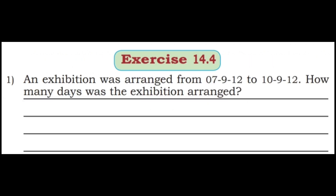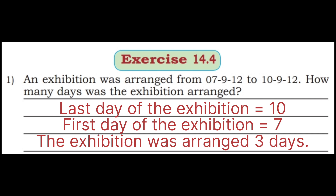Let us see Exercise 14.4. First question: An exhibition was arranged from 7/9/12 to 10/9/12. How many days was the exhibition arranged? The last day of the exhibition is 10, and the first day of the exhibition is 7. The exhibition was arranged for 10 minus 7, which is 3 days.